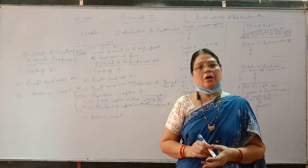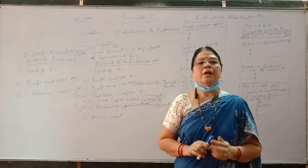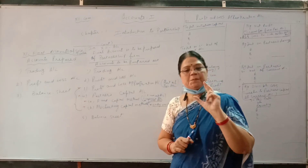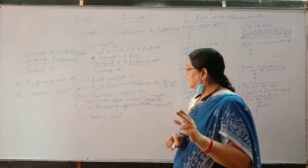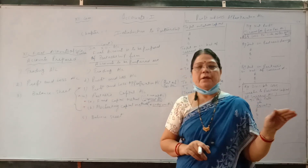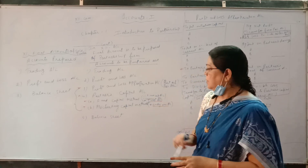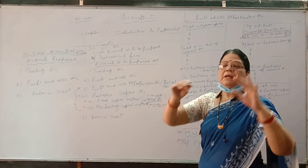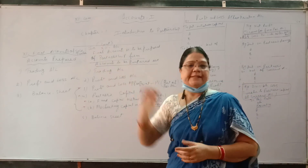Divisible profit is divided among the partners in their ratio as given. If ratio is not given, then profit and loss is distributed in equal ratio, that is 1:1:1. The balance sheet is the same as we prepared — that is the capital and liability side and the asset side.